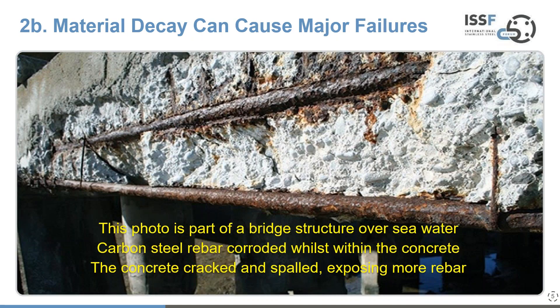Material decay can be quite extreme, as shown in a photograph of a steel chain. It can cause major failures — for example a bridge structure over seawater constructed with carbon steel rebar encased in concrete. The carbon steel rebar corrodes, and rust being larger in volume than the original substrate metal causes the concrete to crack, spore and expose more rebar. This is a great example of where the appreciation of the corrosive environment was perhaps not fully understood.